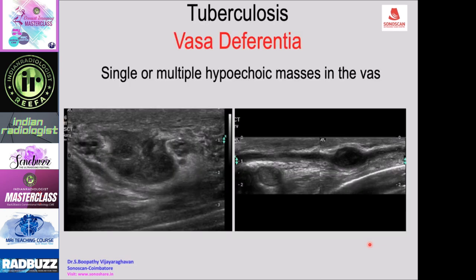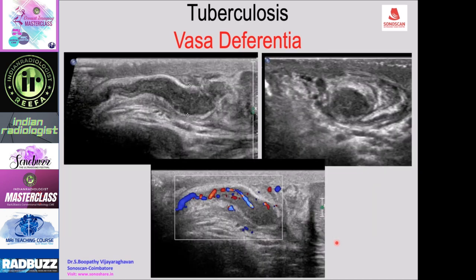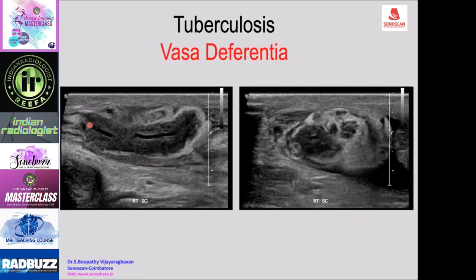Tuberculosis of the vas deferens can present as single or multiple hypoechoic masses in the vas. There may be an irregular mass in the spermatic cord just above the testis, with a thickened vas deferens and focal necrotic mass. Marked thickening of the vas deferens with focal increased thickening seen on longitudinal and short axis views, along with hyperemia on color Doppler, is characteristic.